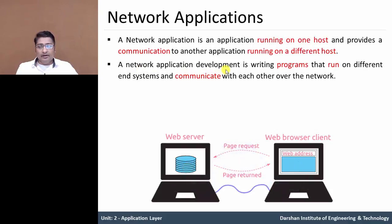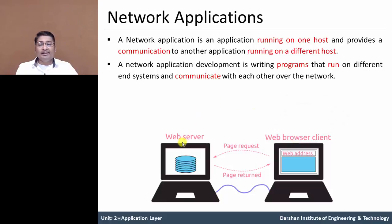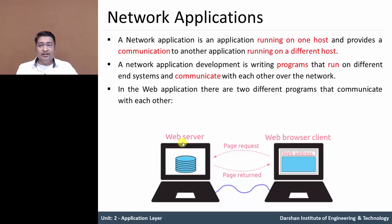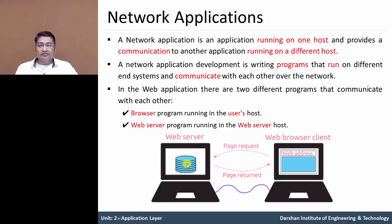For example, if host one sends a request to host two, host one has an application named the web browser. In that figure, there are two different programs and they communicate with each other. The browser program on host one — the client — runs on the user host, and the web server program runs on the web server host. The client sends a page request to the server application, and the server processes it and replies to the client with that particular page. So that is a network application.